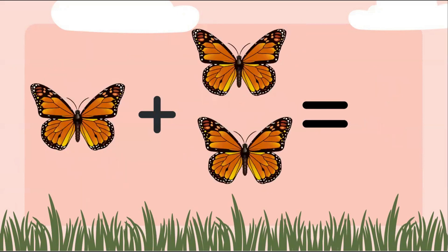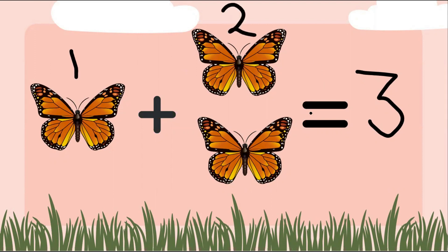Can you solve this one on your own? Go ahead and tell me — what answer did you get? Awesome job, students! You're right, the answer is three. We have one bug plus two bugs gives us three. Let's count our total bugs together: one, two, three. Our answer is three.